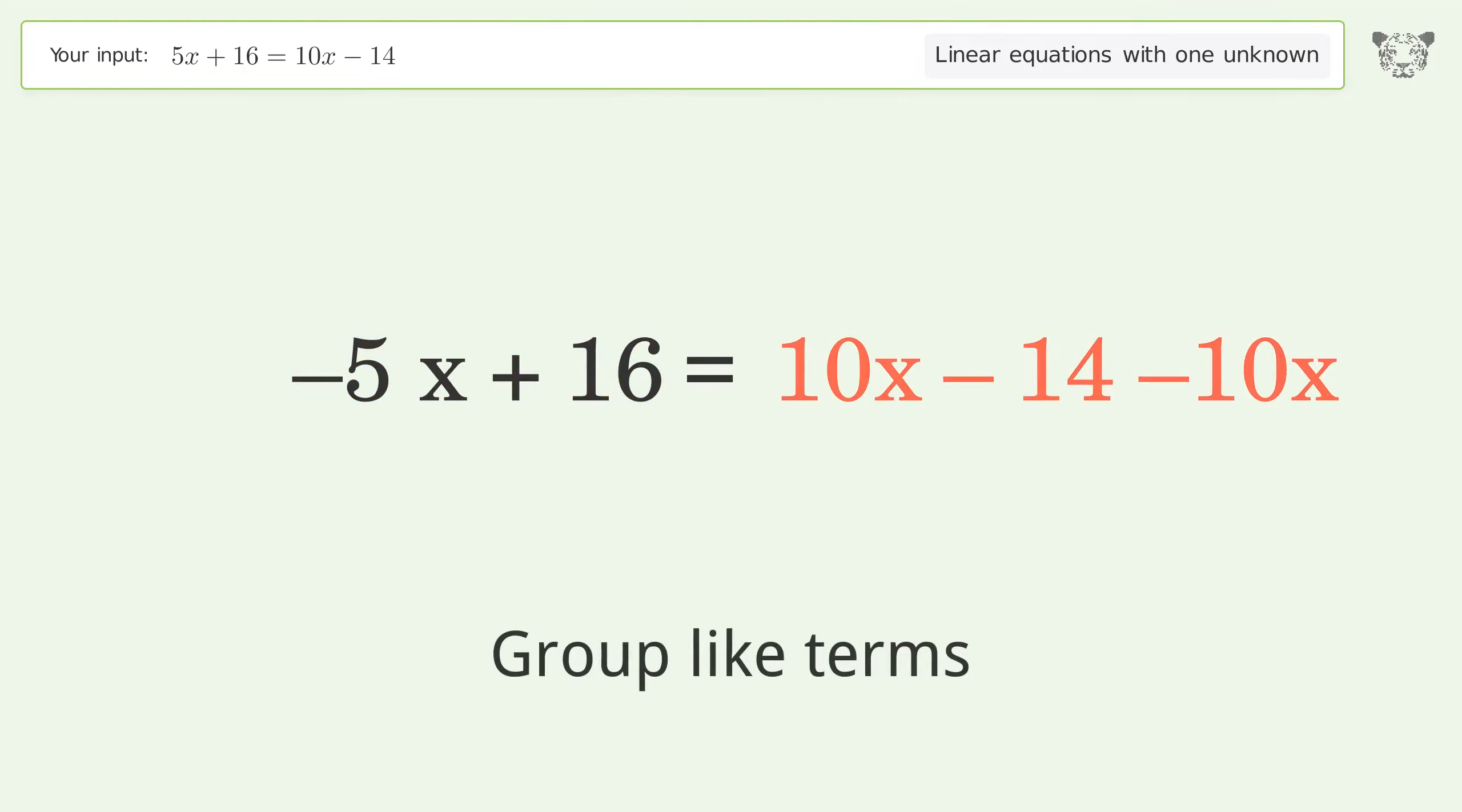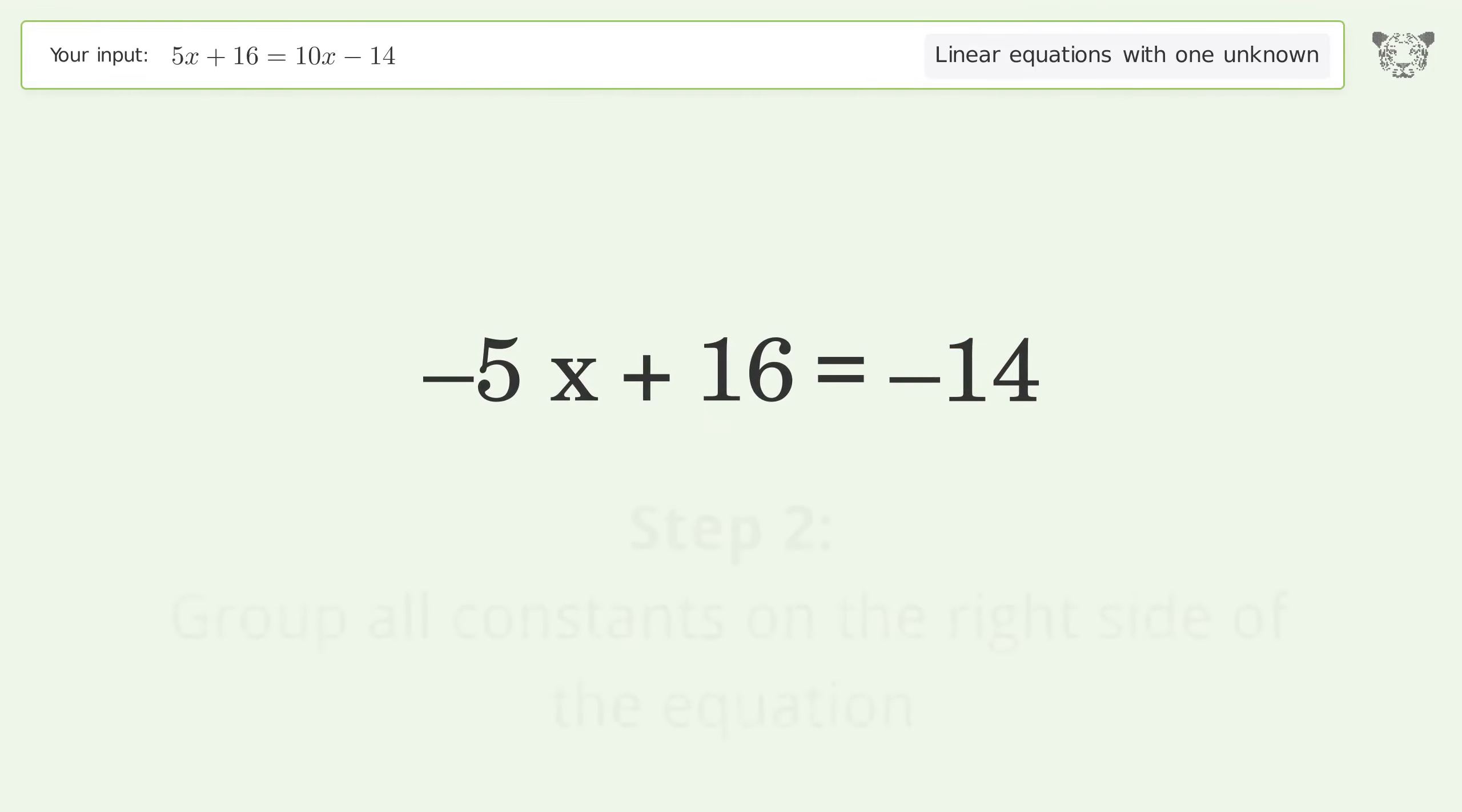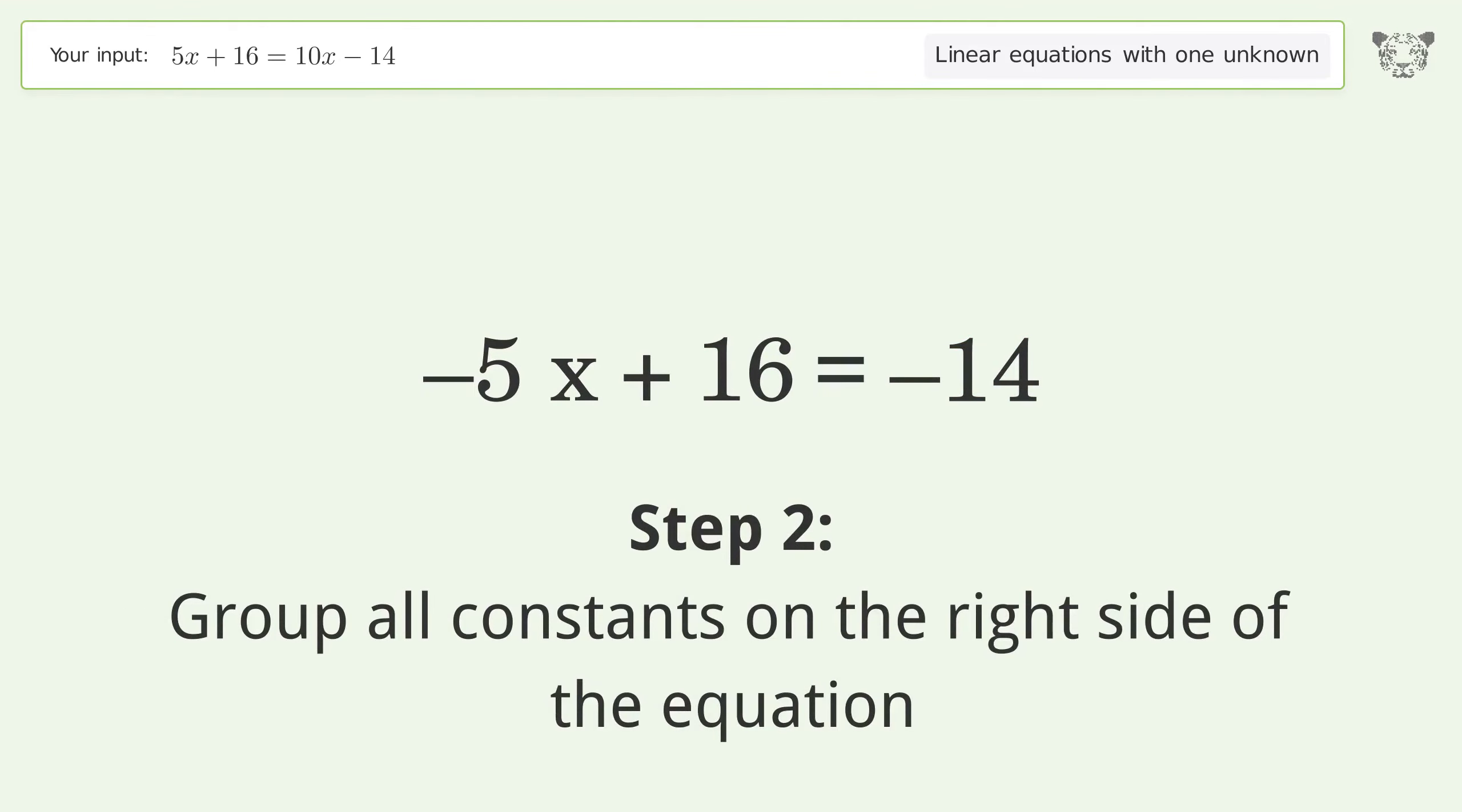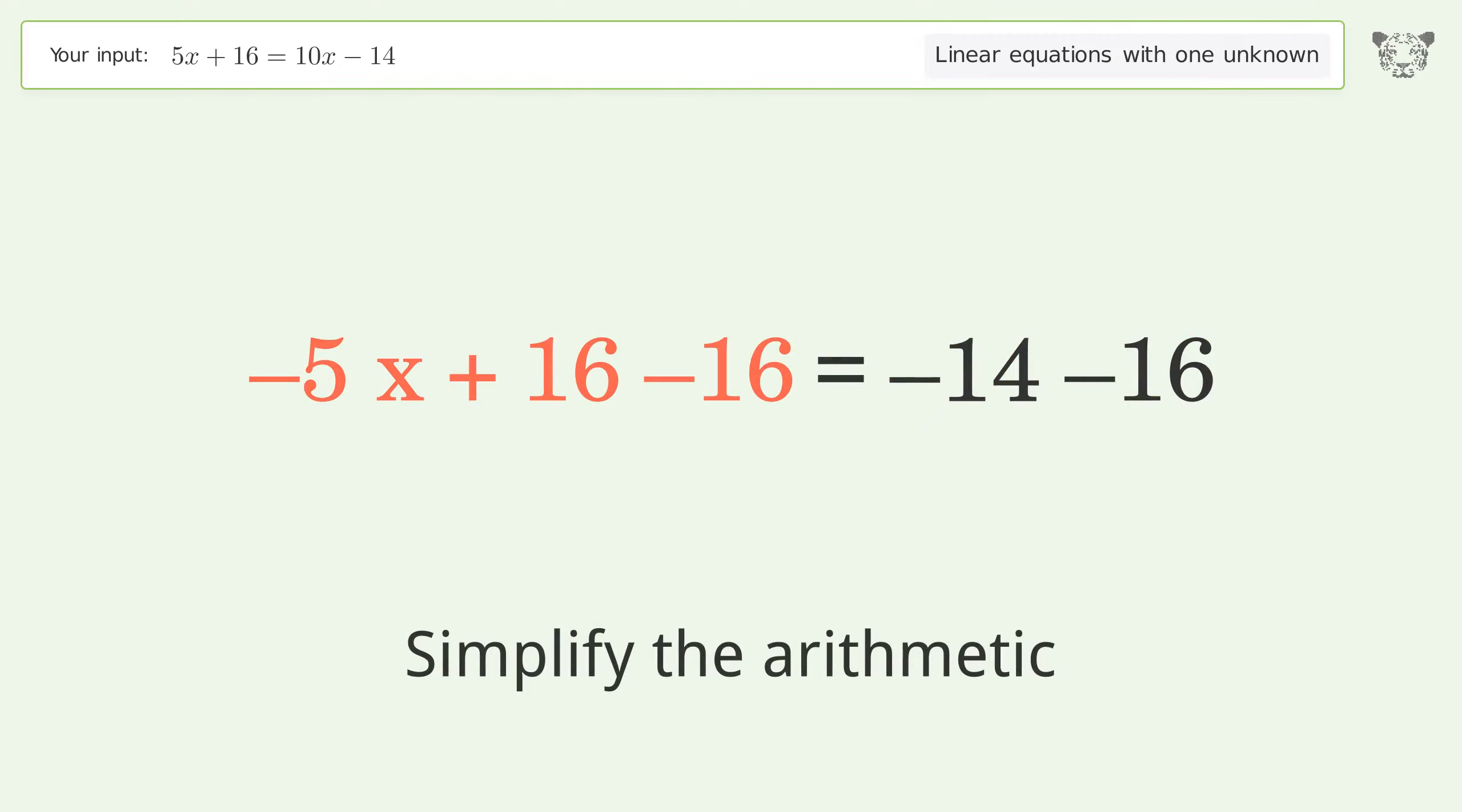Group like terms. Simplify the arithmetic. Group all constants on the right side of the equation. Subtract 16 from both sides. Simplify the arithmetic.